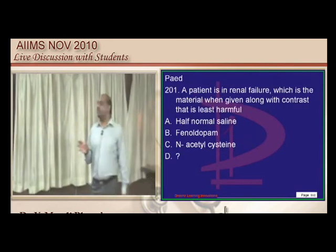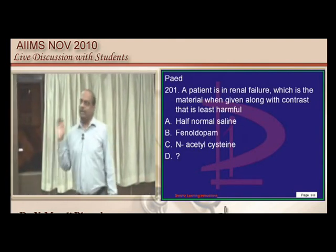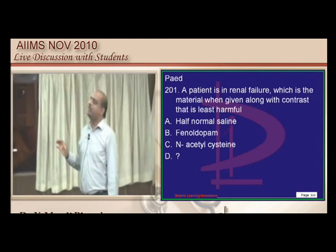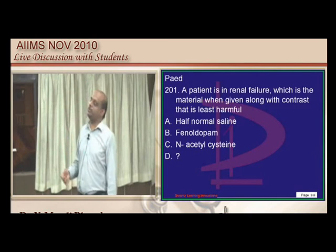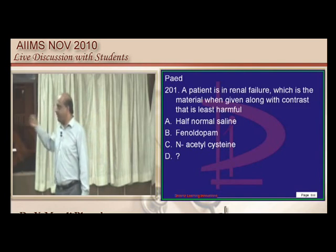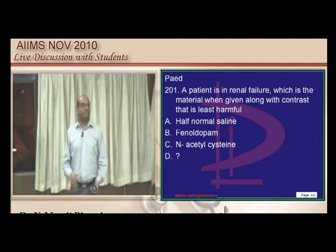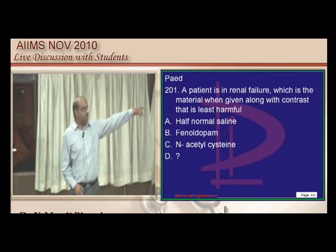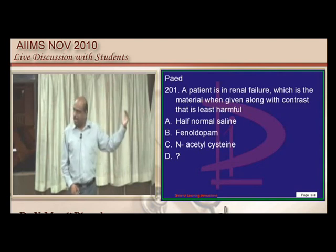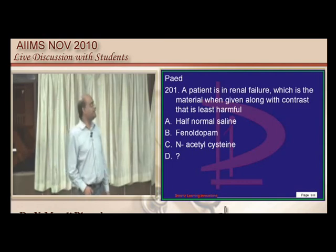In a patient with renal failure requiring IV contrast, to prevent contrast-induced nephropathy: give half normal saline and N-acetylcysteine routinely before any IV contrast procedure. These are both indicated to prevent contrast-induced nephropathy.